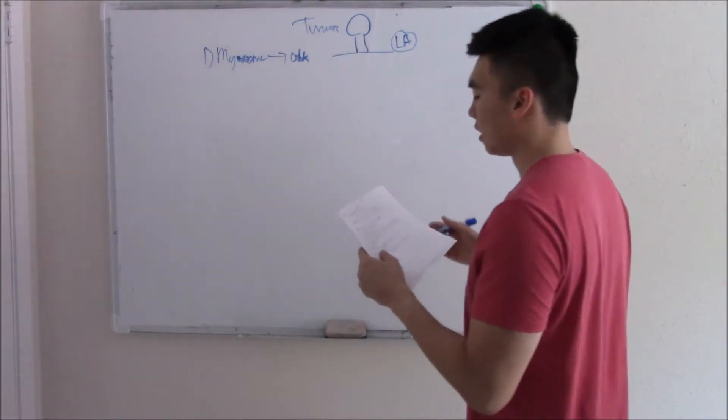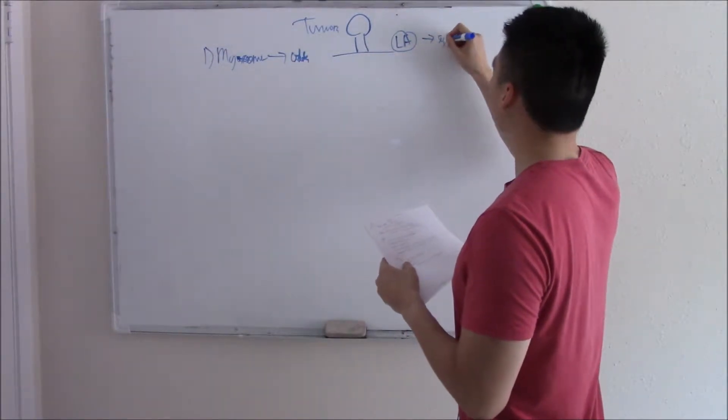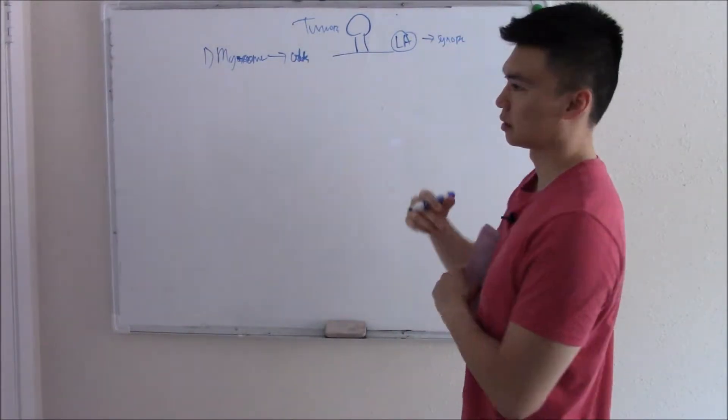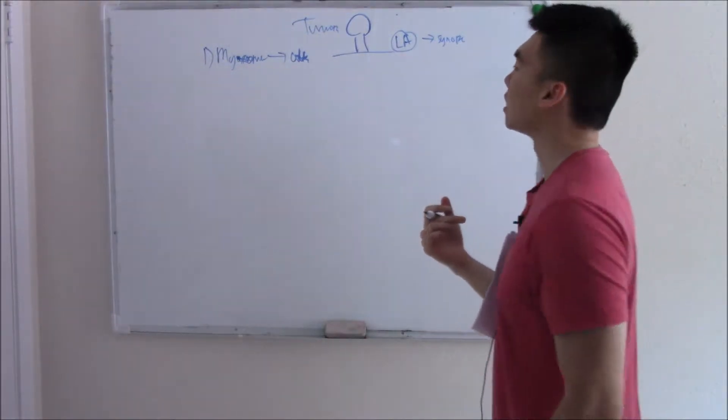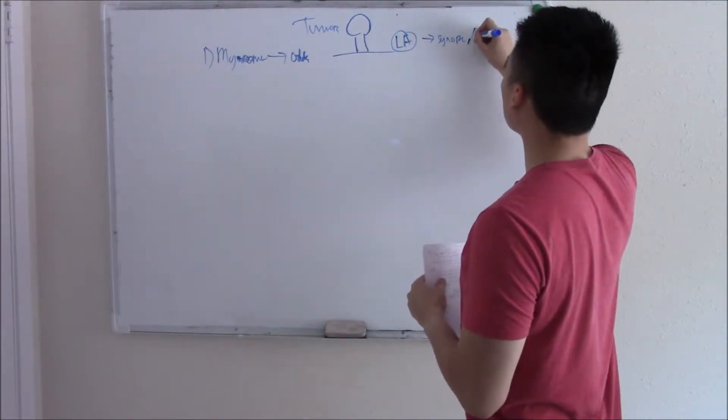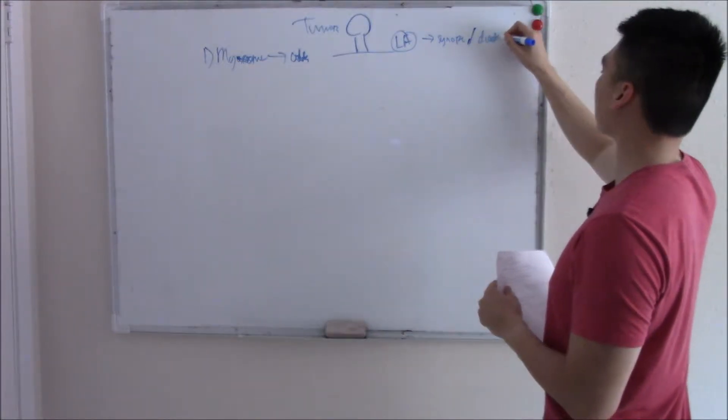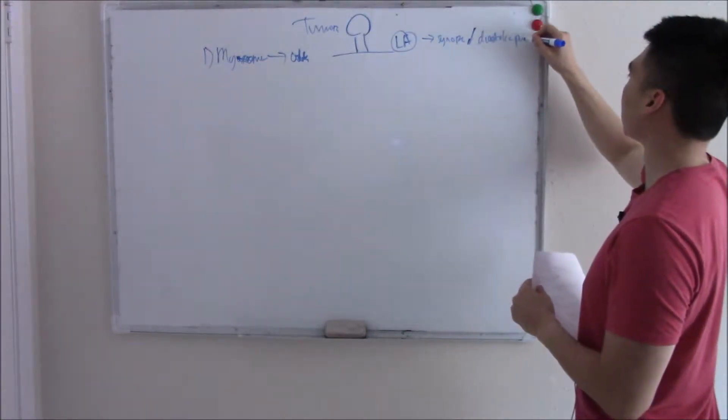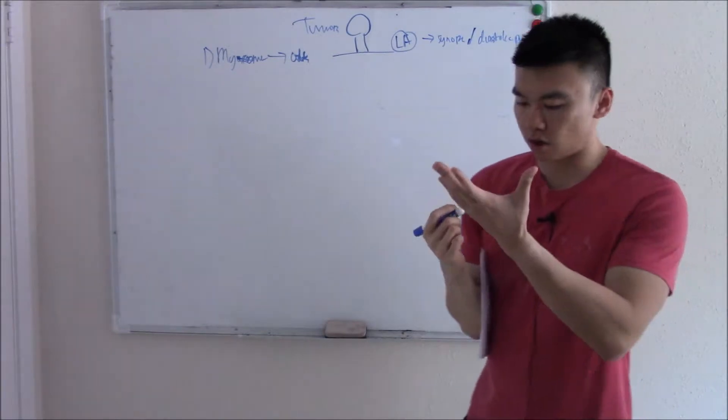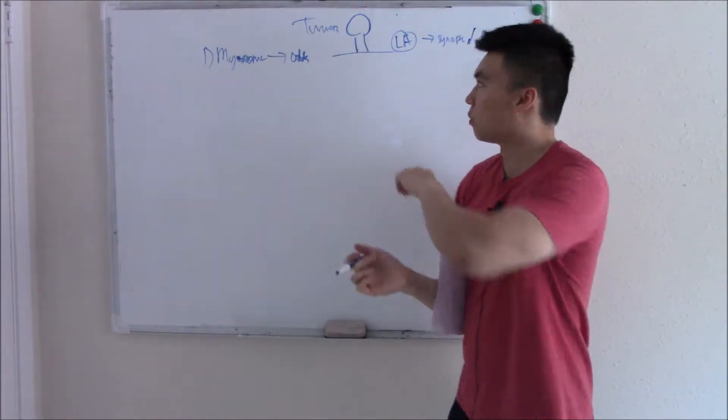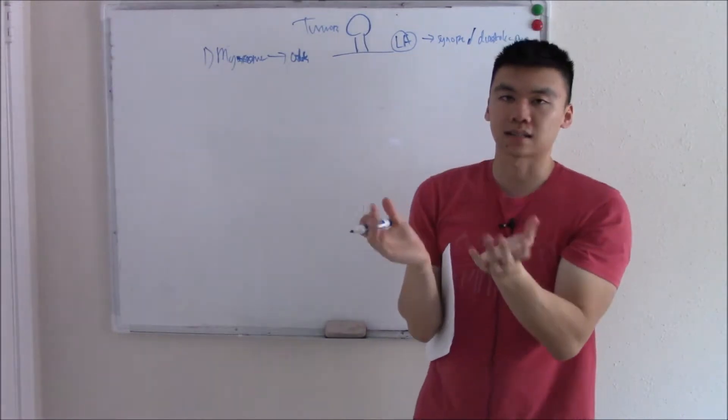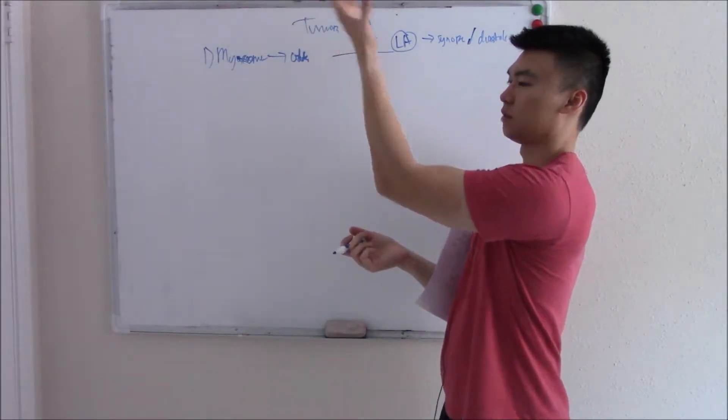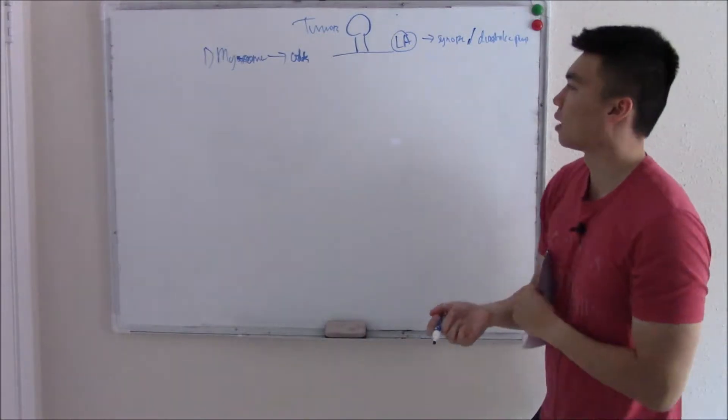They want you to know that it can cause syncope. As you can imagine, this mass can compress on valves or obstruct outflow and cause syncope. Also, it causes a diastolic plop, diastolic plop that you can hear. So in systole, when your heart contracts, it'll push the blood. It'll flop this mass up. And then in diastole, when your heart relaxes, the little pedunculated mass will fall back down. Cause a little plop. Diastolic plop.